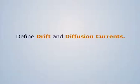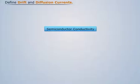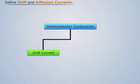Define drift and diffusion currents in a semiconductor. There are two types of current which are responsible for conductivity: drift current and diffusion current.